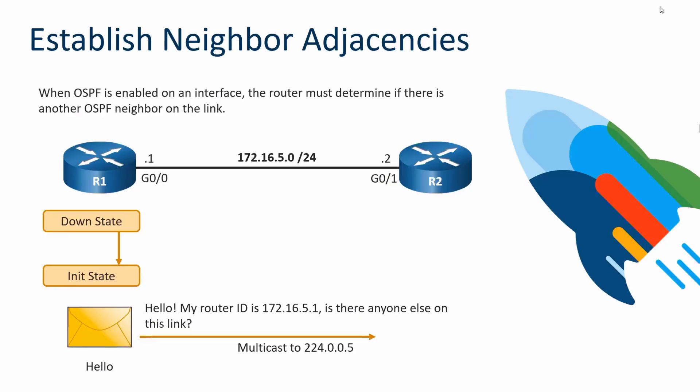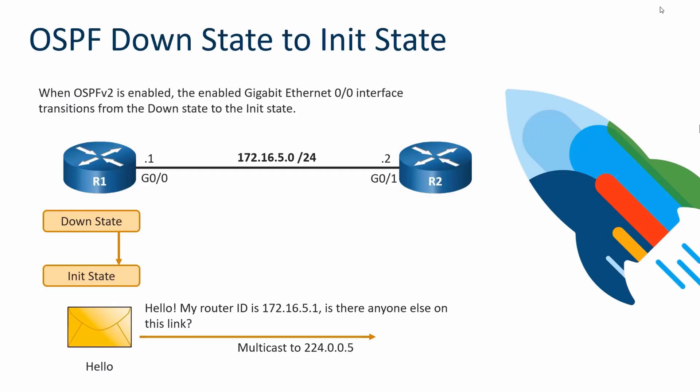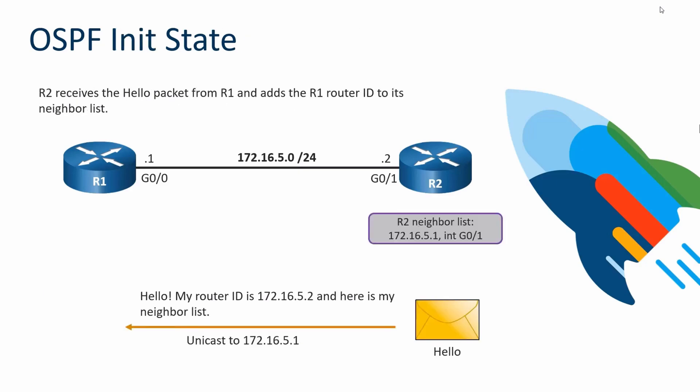Router R1 announces its router ID of 172.16.5.1, a 32-bit value, and asks if there's anyone else on this link. To stay in the Init state, we need to get a response back. OSPF has been activated; we move from Down to Init by sending a Hello. When we get a Hello back, we stay in Init because we've now seen someone else on this OSPF-activated link — we've received a Hello from R2.